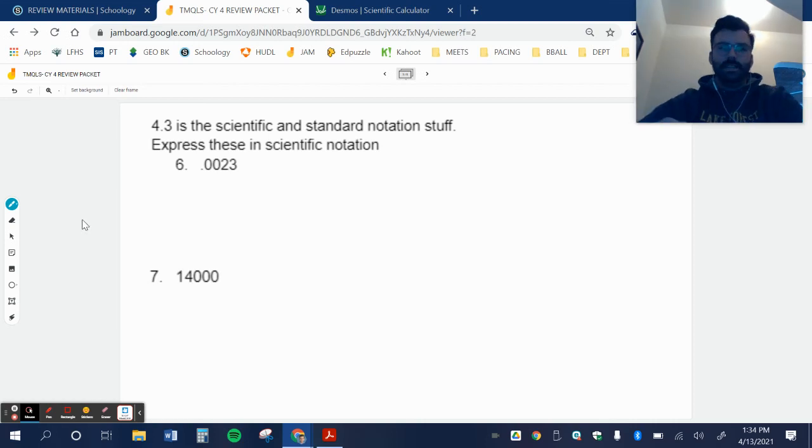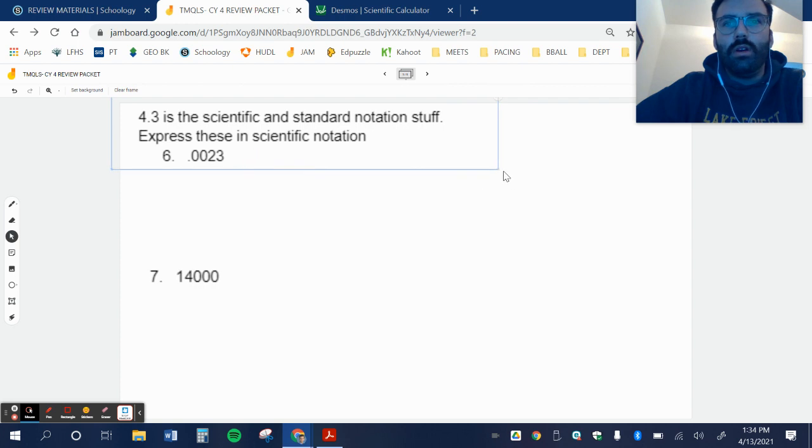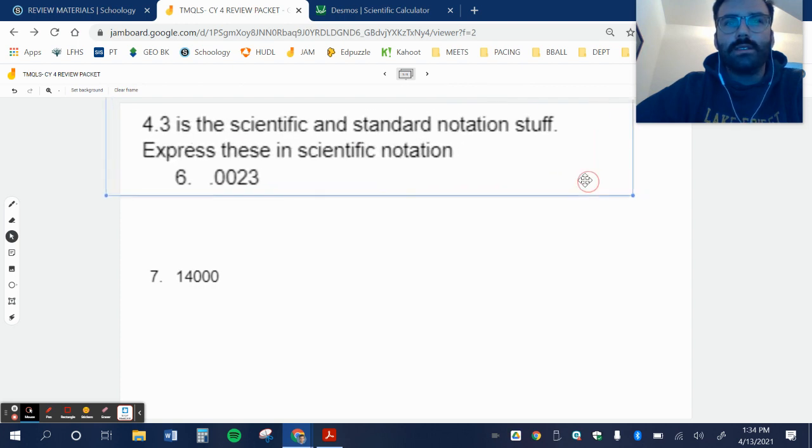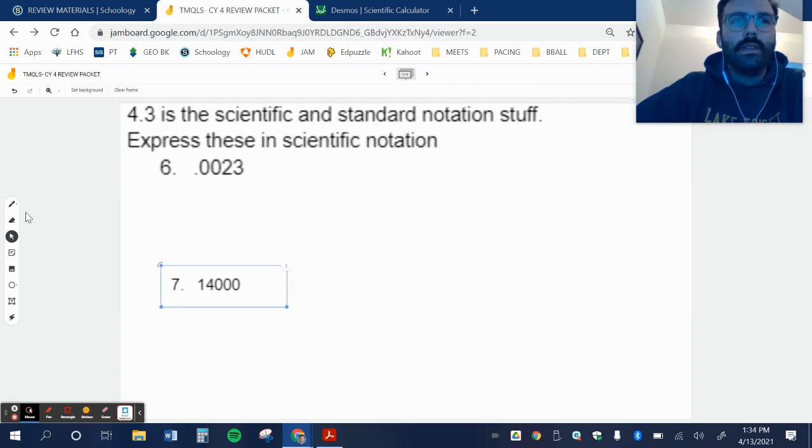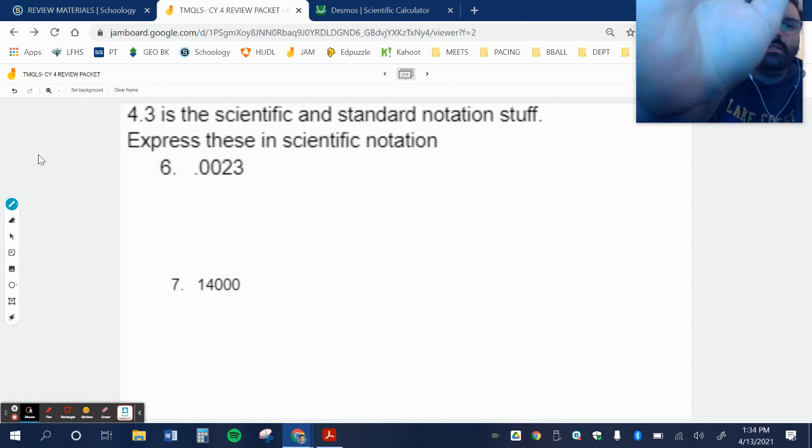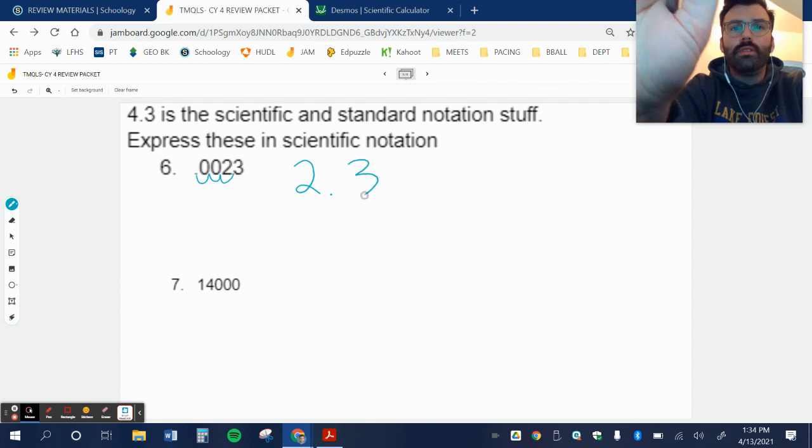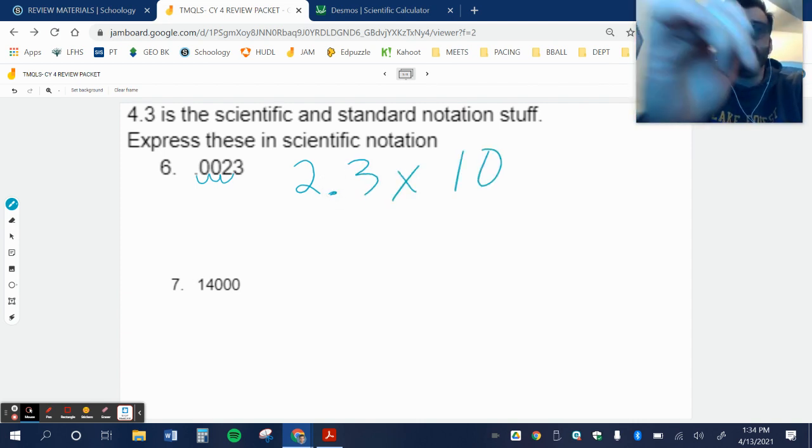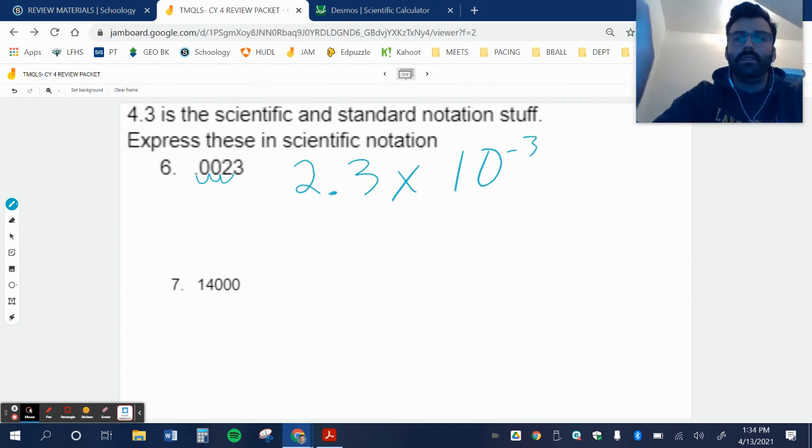All right, we want to express in scientific notation. So I start with a small number, a small decimal. I have 0.0023, so I need to move my decimal place one, two, three times, so that I have 2.3 times 10. And since I start with a small number like this, a small decimal, I'm going to have a negative exponent.